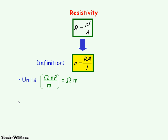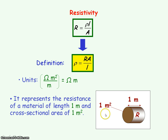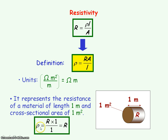Resistivity is similar in name to resistance, but it specifically measures resistance for a wire of length one metre and cross-sectional area one metre squared. So if L and A both equal one, resistivity equals resistance. Resistivity is a constant for a material in that it does not depend on the length or cross-sectional area, unlike resistance.